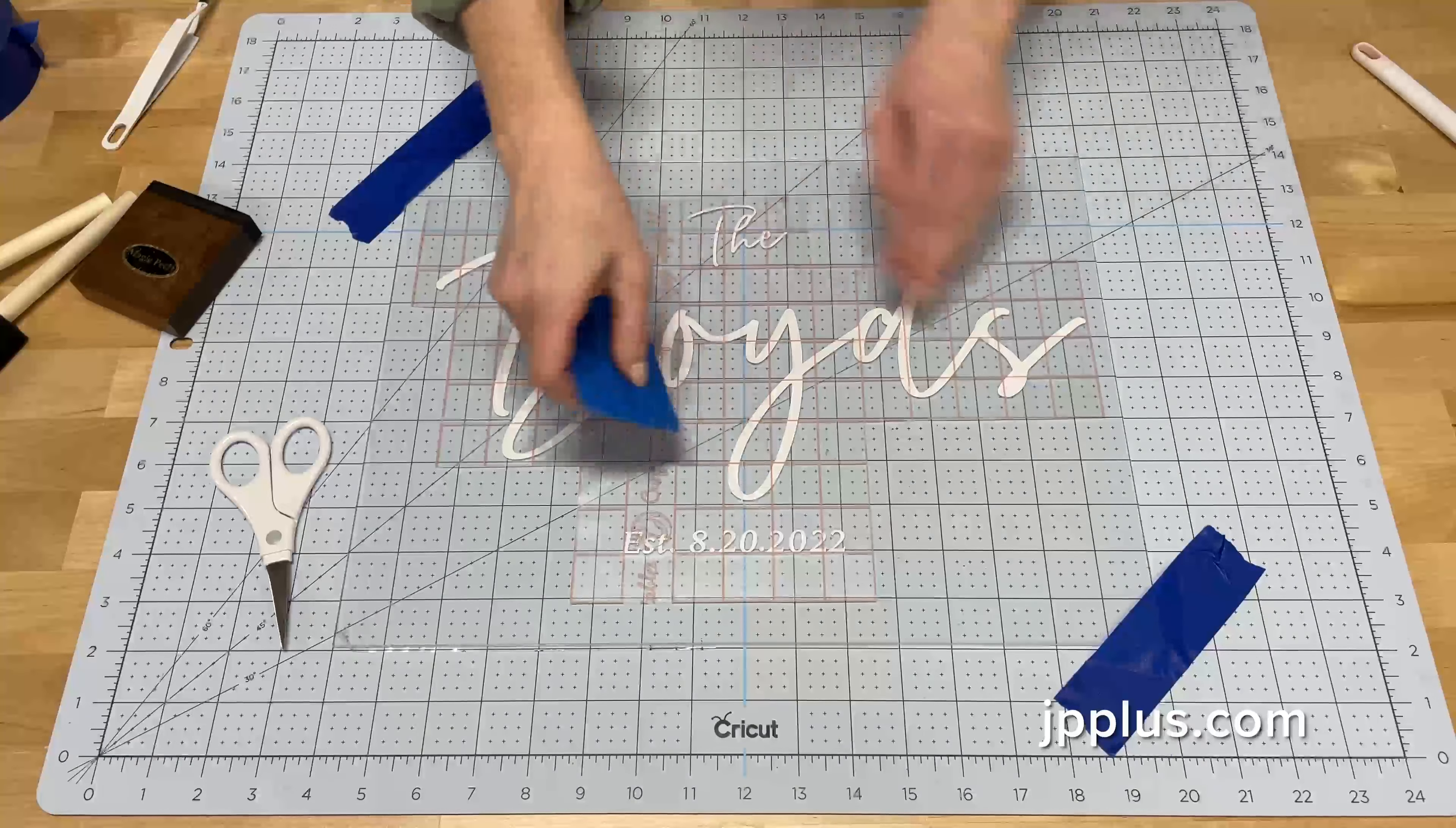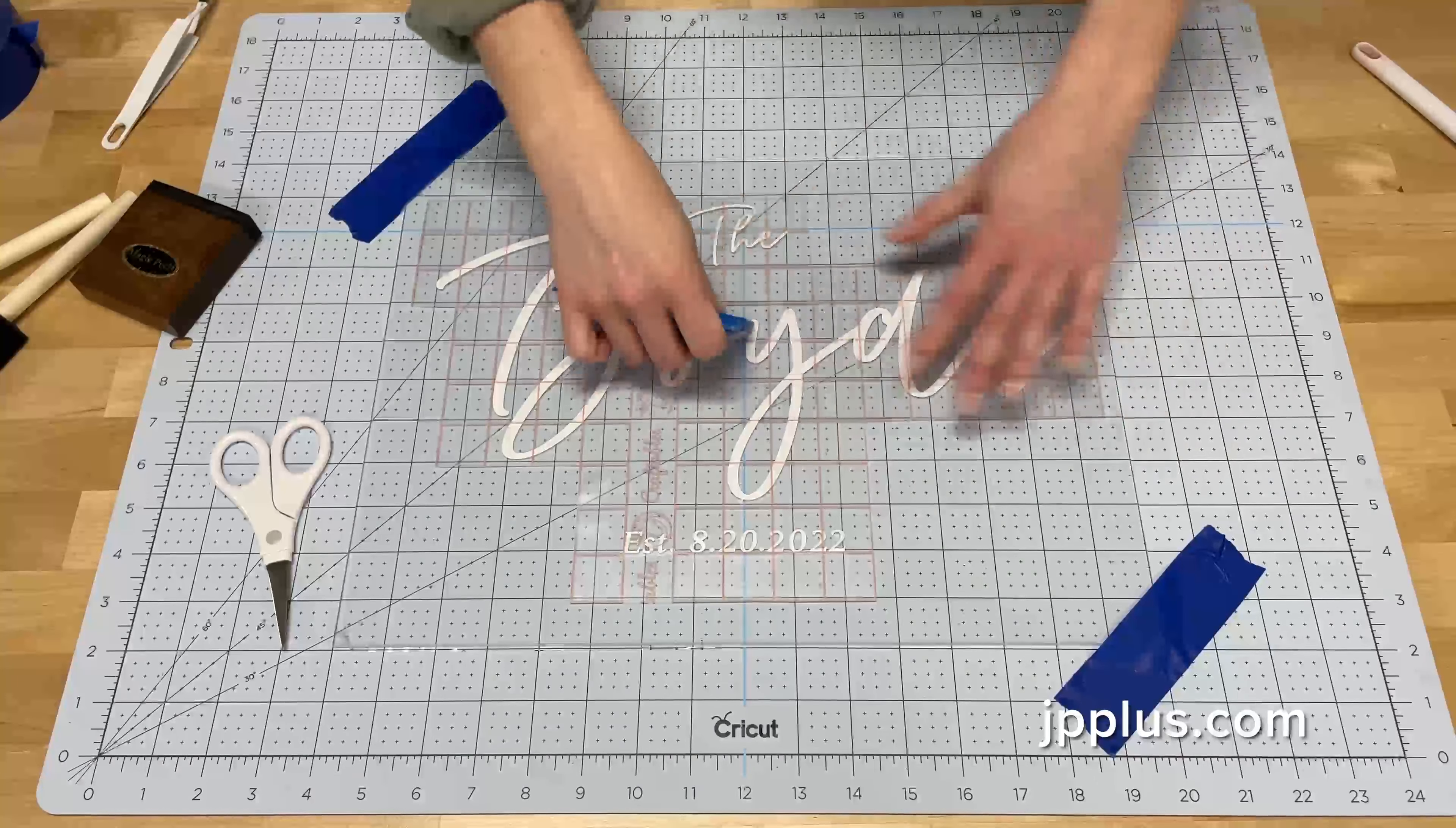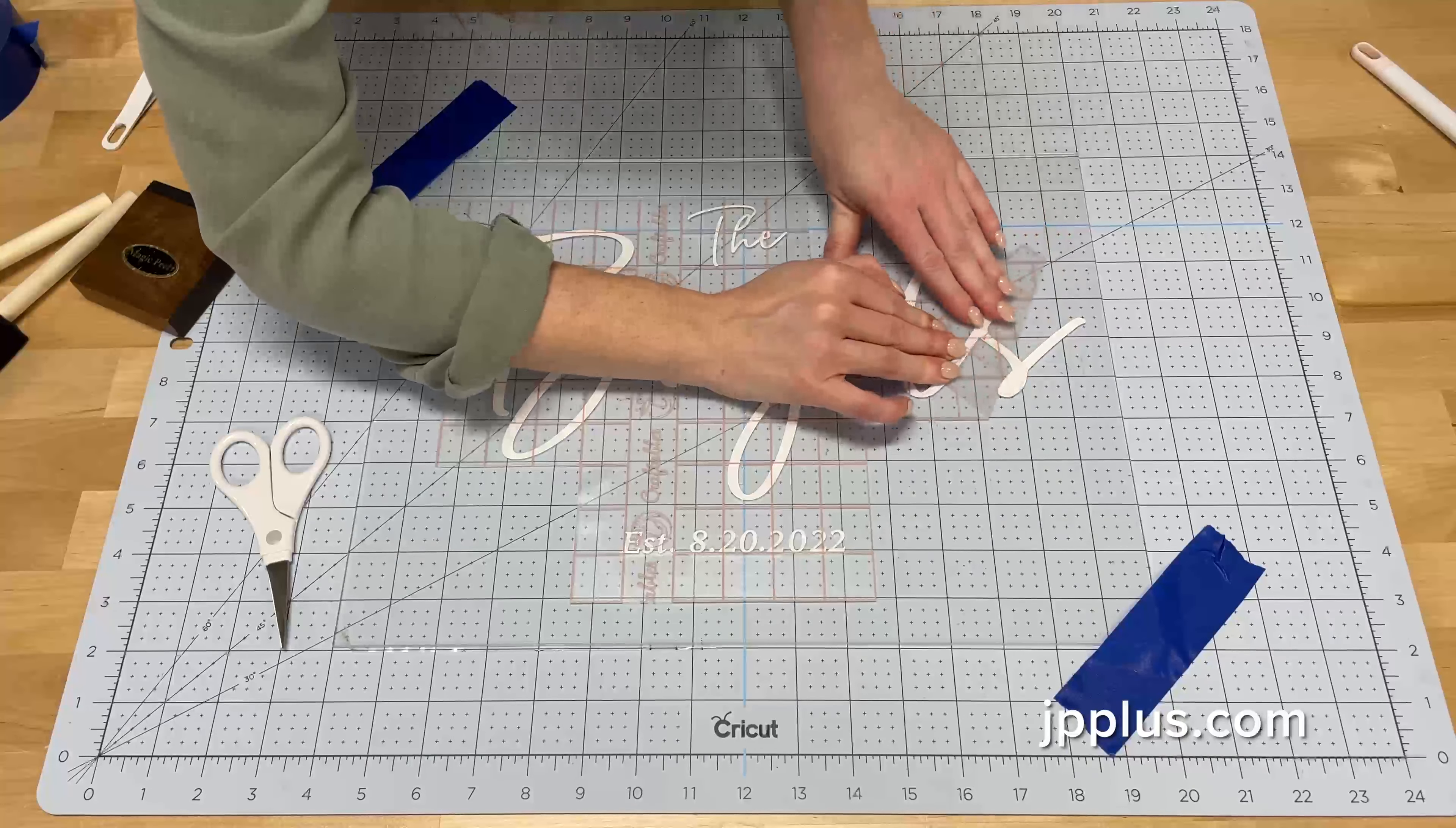So we're going to burnish the side just like we did the other side to make sure that the vinyl is stuck down to the clear acrylic so that we can easily remove the transfer tape. Okay, so we are going to start at one corner and peel back the transfer tape and keep it close to the acrylic and slowly pull it back.